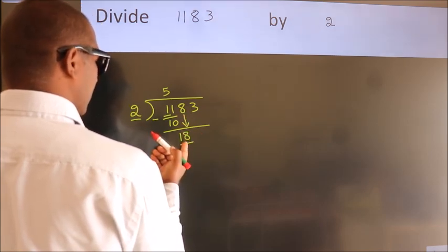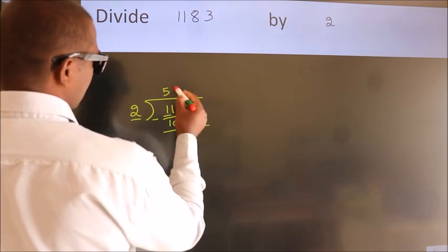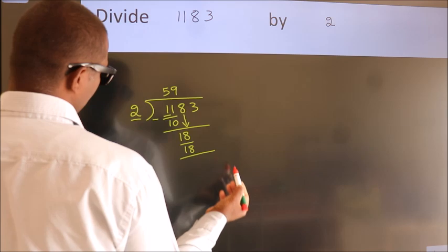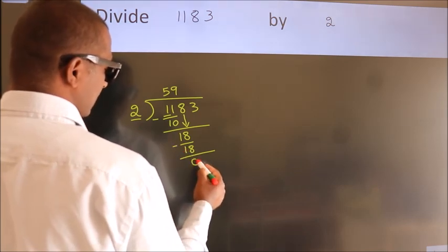When do we get 18? In the 2 table, 2 times 9 equals 18. Now we subtract. We get 0.